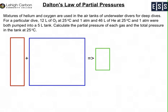Calculate the partial pressure of each gas and the total pressure in the tank at 25°C. I've represented here the different quantities in the tanks. The first tank contains oxygen. We have 12 liters of oxygen at 25°C and 1 atmosphere of pressure.